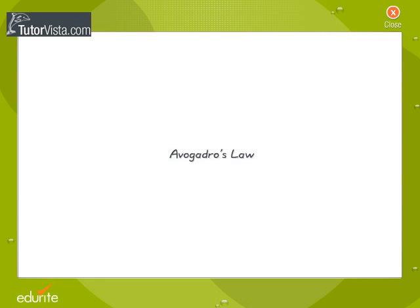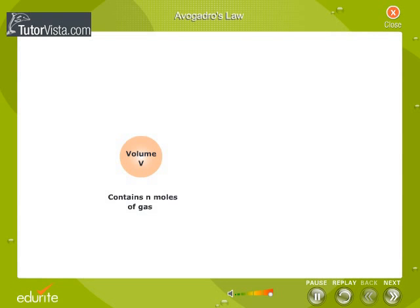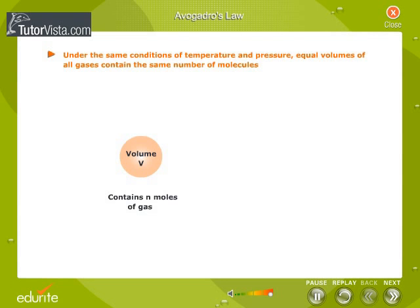Avogadro's Law. Amedeo Avogadro, an Italian scientist, proposed that under the same conditions of temperature and pressure, equal volumes of all gases contain the same number of molecules.